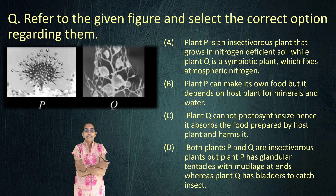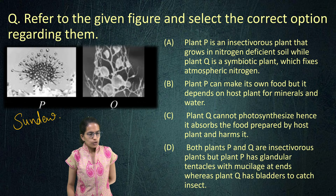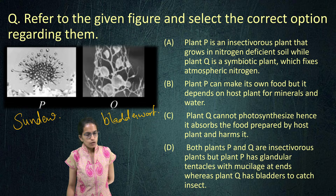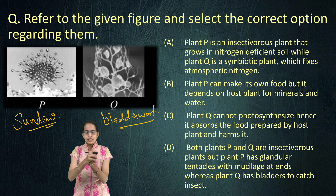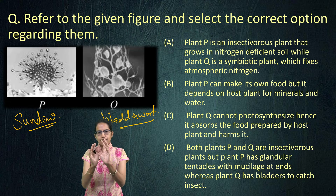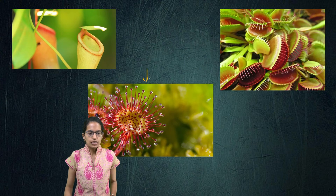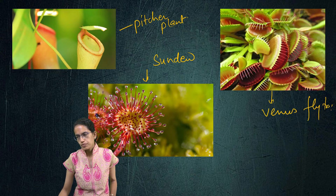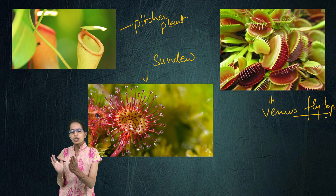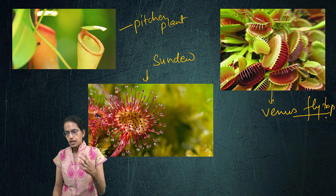The next question covers insectivorous plants. P and Q are both insectivorous plants — P is sundew and Q is bladderwort. Sundew has spikes with mucilage on them, so when an insect comes it sticks to them. Bladderwort has a bladder which creates a partial vacuum and sucks the insect inside. Other insectivorous plants shown include the pitcher plant and the Venus flytrap, which has a rapid active movement of closure and opening to capture passing insects. Bladder traps are found in bladderwort.